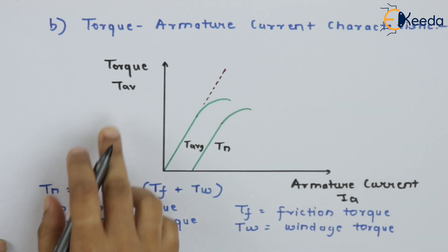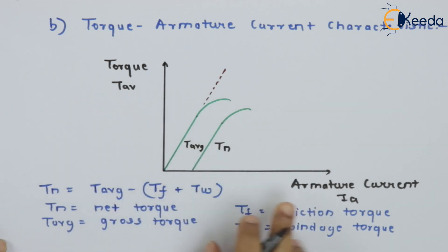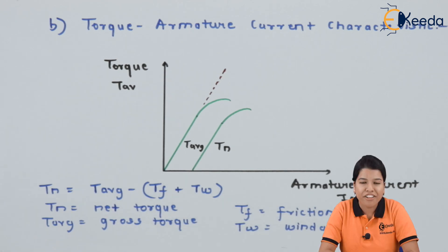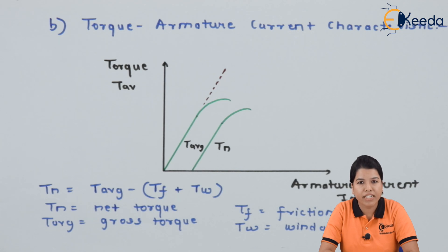This is the characteristic of torque versus armature current for DC shunt motor. Thank you friends for watching this video. Stay tuned with Ikeda and do subscribe to our channel Ikeda. Thank you.